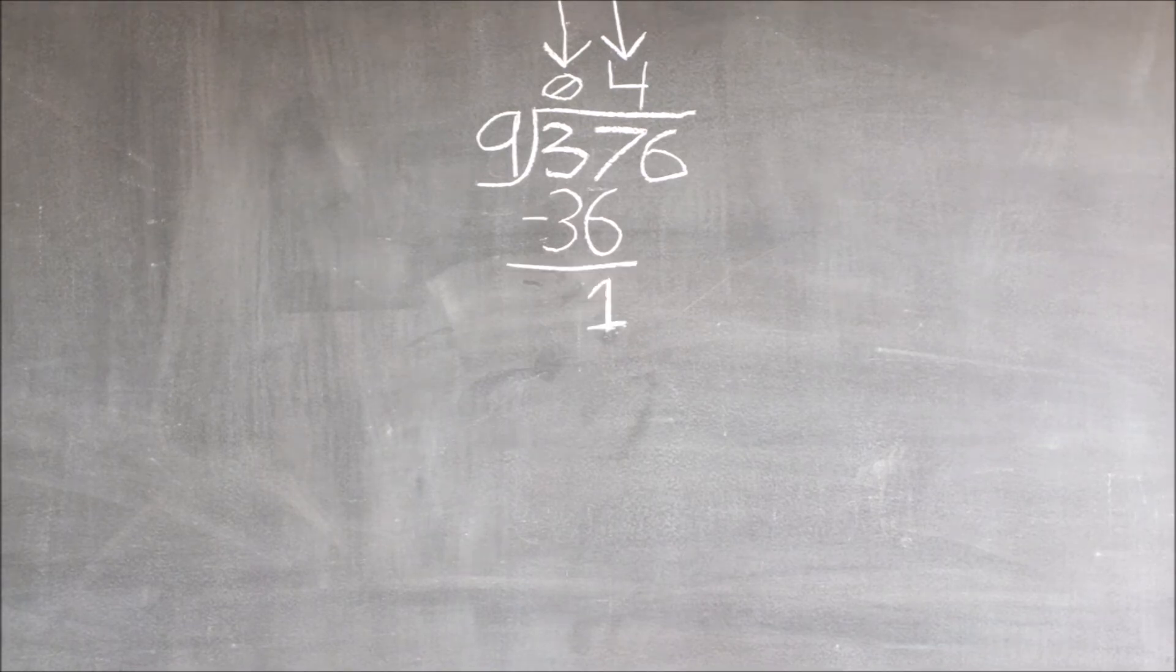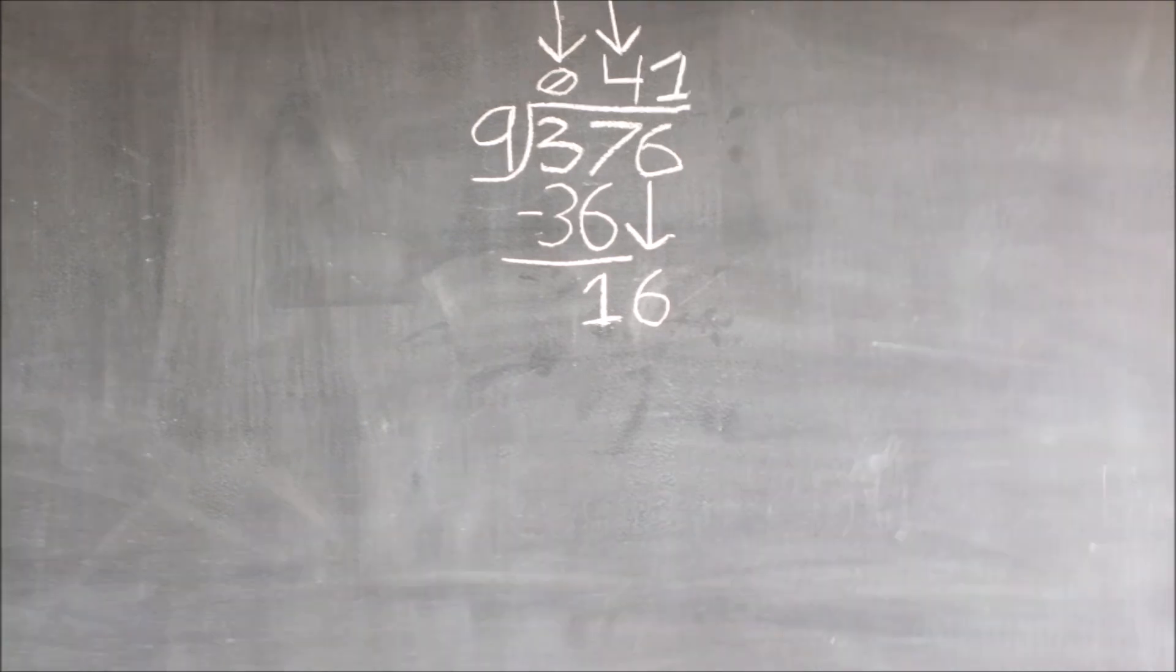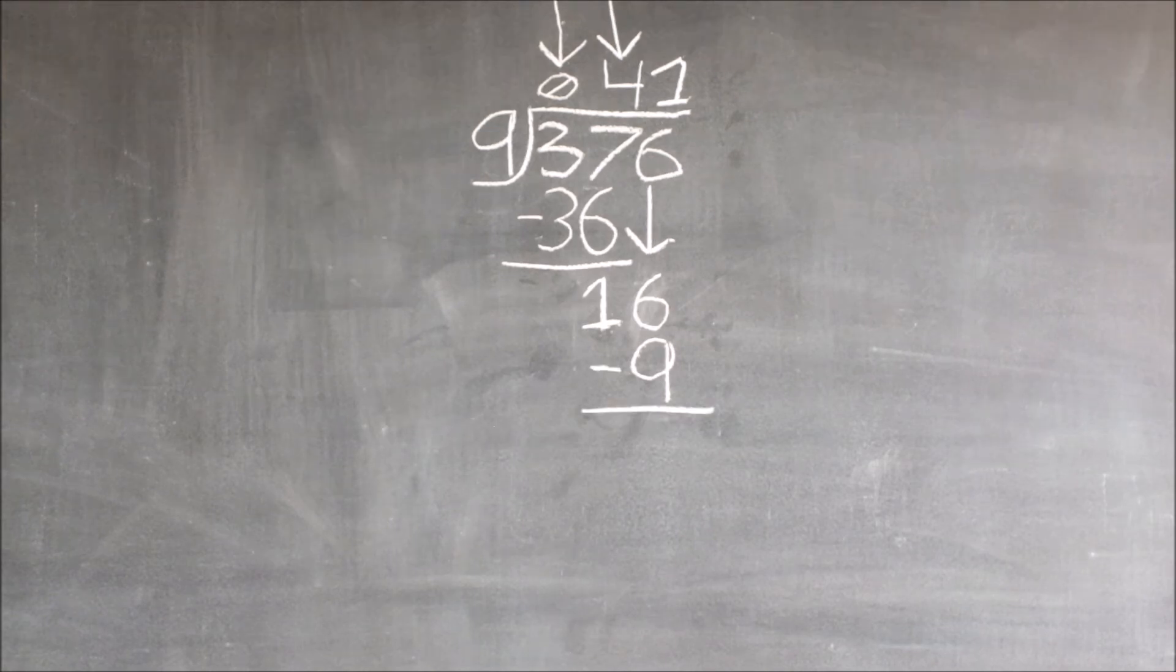Next, we bring down the six. We have now brought down the six. Nine goes into 16 only once. Nine times one is nine, and then we write the nine underneath the 16, and then we subtract them both, which finally equals seven.